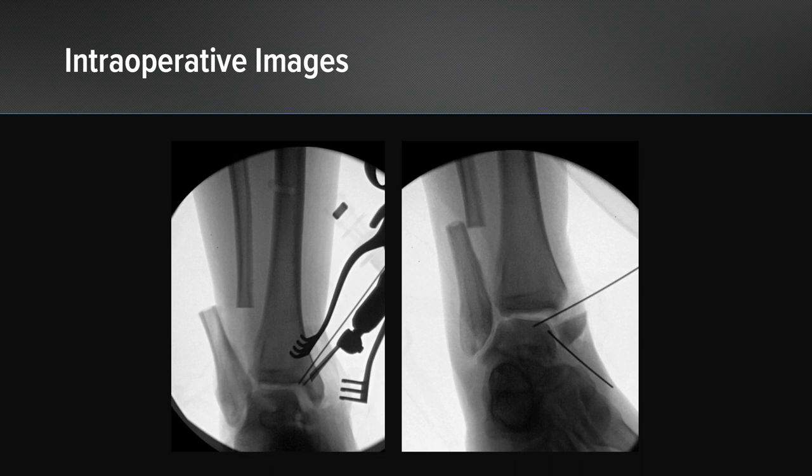K-wires were placed to plan the trajectory for the chevron-type osteotomy of the medial malleolus, which was then completed and hinged distally on the deltoid ligament to gain access to the medial aspect of the talar body. Here we can see the osteotomized fragment taken distally for exposure.